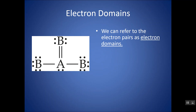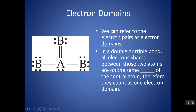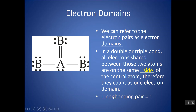To determine the shape, we're going to count what's called the number of electron domains. Electron domains are places where you find electrons — essentially how many sides your central atom has. Any non-bonding or lone pair counts as one domain. And a bond of any sort, whether it's single, double, or triple, counts as one electron domain.